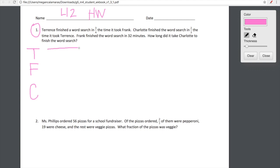Before we start calculating, let's just organize information that we've been given. So three characters in this word problem. We have Terrence, Frank, and Charlotte. I'm going to draw tape diagrams. Please keep in mind these are not proportional to one another. I'm just drawing rectangles to represent the amount that each friend finished the word search.